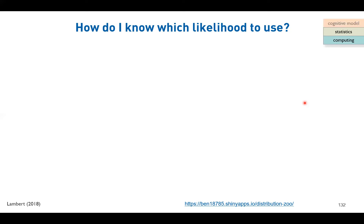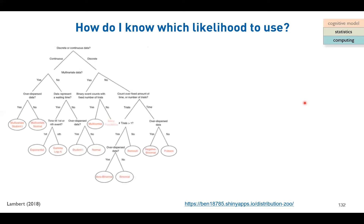After rephrasing the question, think about distributions you already know: binomial, normal, Poisson, multinomial, multivariate normal. There are many, but you don't have to memorize everything. The solution is a decision tree — a map that guides you to the appropriate likelihood function for your data. Knowing where to start is more important than memorizing all distributions.